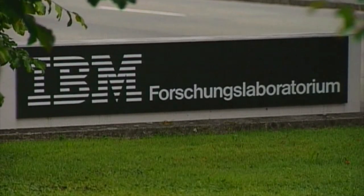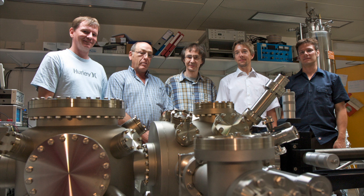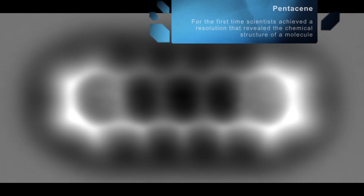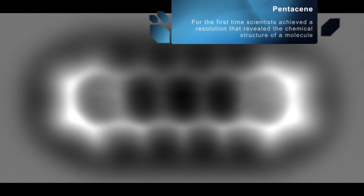In 2009, IBM researchers published a groundbreaking paper in the Journal of Science detailing how they imaged for the first time the anatomy or chemical structure inside a molecule with unprecedented resolution.